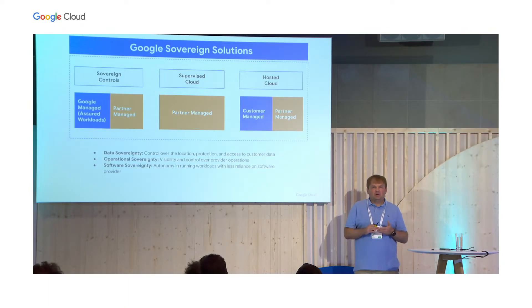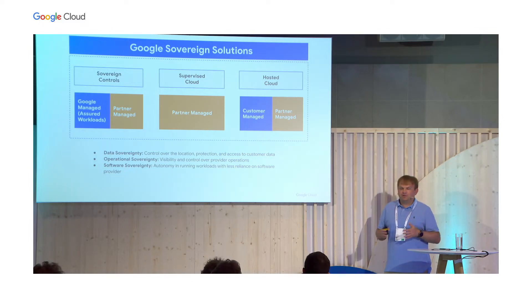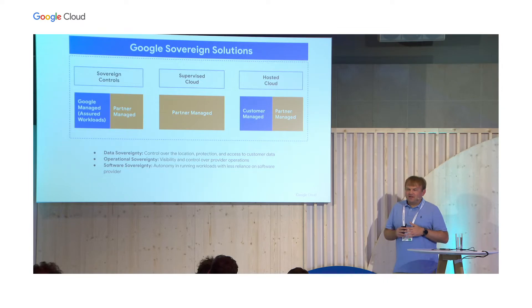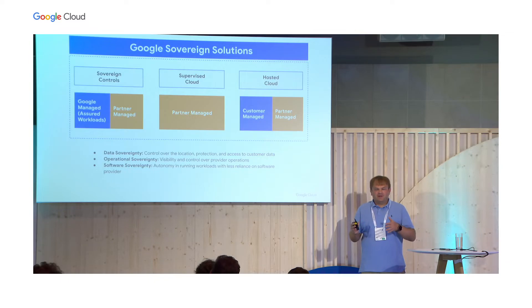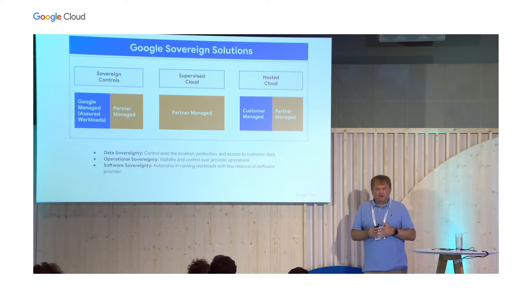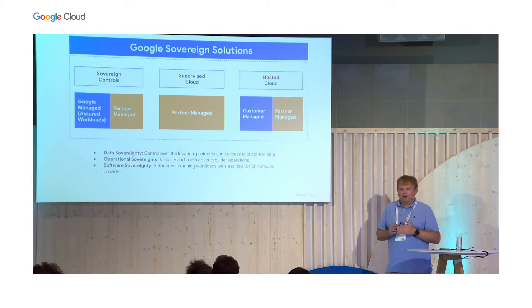For partners and customers in the EU, we can offer three options. Our sovereign controls product allows you to define the location of your core data, who has access to it, and the control of cryptographic keys — and without all these technical controls, we believe you don't have data sovereignty. Customers can also apply GCP's core platform controls such as DLP to de-identify data, or confidential computing to encrypt data while it is in use. On top of that, partner-managed sovereign solutions add the ability for the partner to monitor and control Google access to data, providing visibility and control over operational elements. Our supervised cloud offering, when available in the future, will be fully managed and operated by partners, supporting data and operational sovereignty for specialized and highly sensitive data.